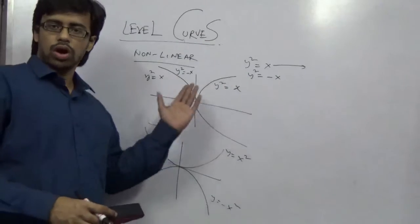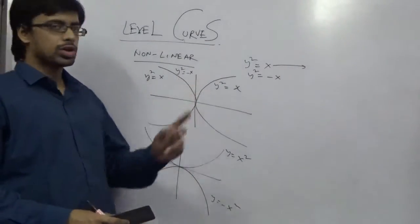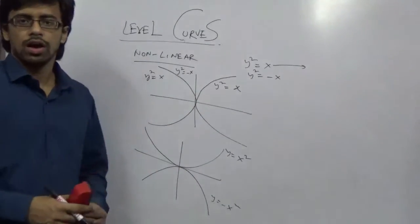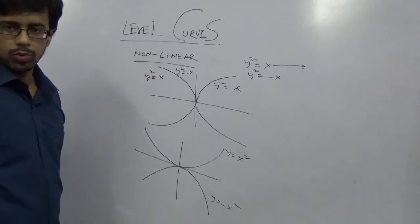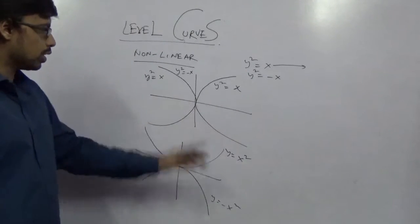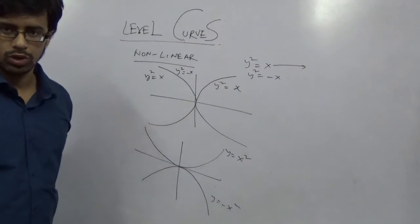So this is the step 1 of the level curves with respect to power 2. Generally it is called a parabola. And there will be some hyperbola types also coming.